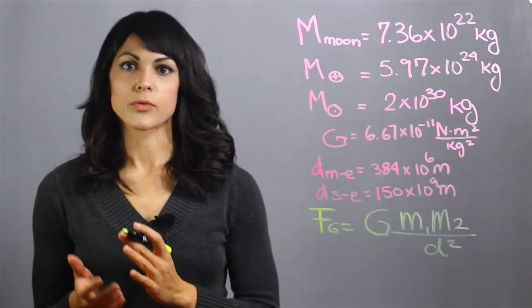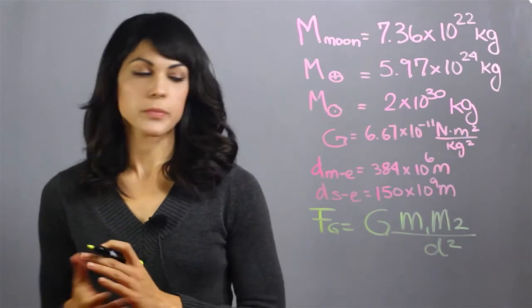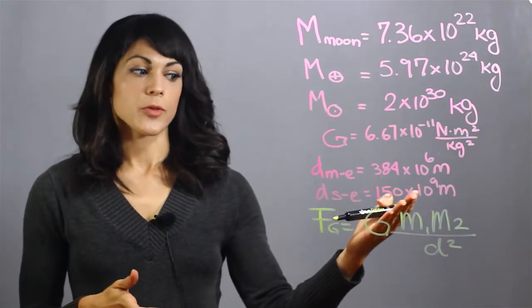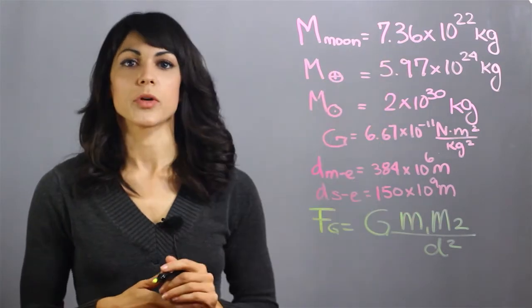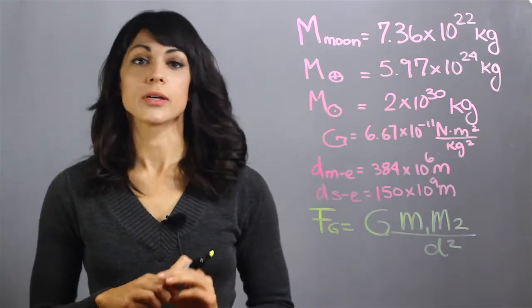You will do similar things for the gravitational pull of the moon. Instead of plugging in the mass of the sun, you will plug in the mass of the moon, which is 7.36 times 10 to the 22 kilograms.